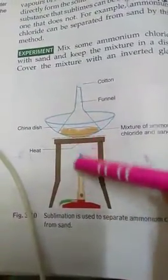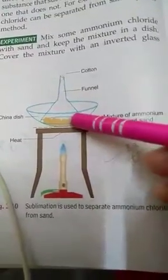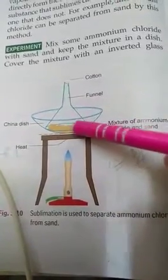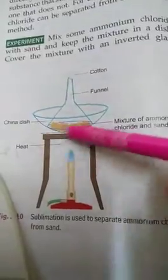Heat the dish gently on a wire gauze. With the help of wire gauze, we heat it. See, wire gauze is placed. This is wire gauze. We place the flame below so that our mixture doesn't get direct heat. That's why we are keeping a wire gauze.